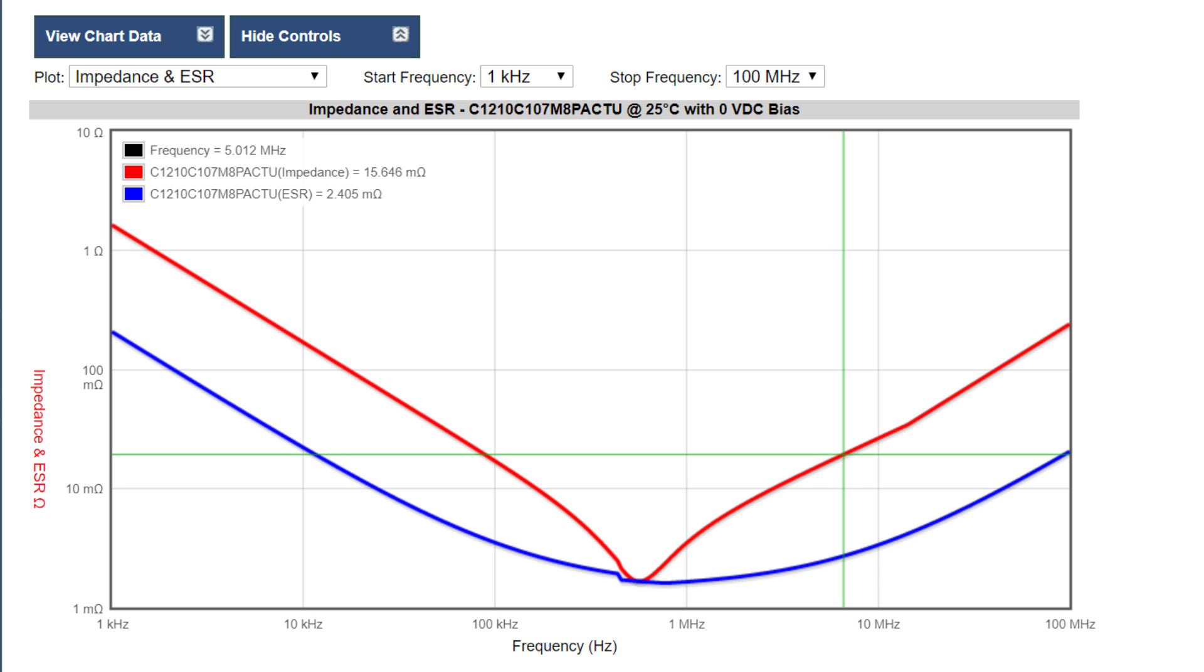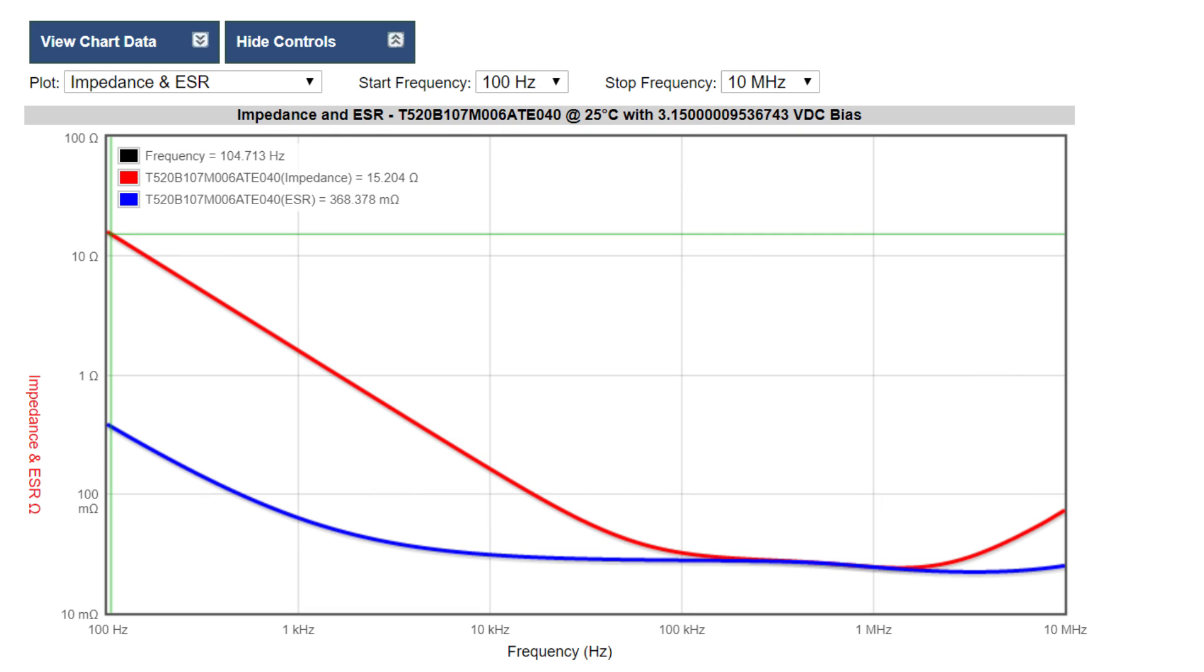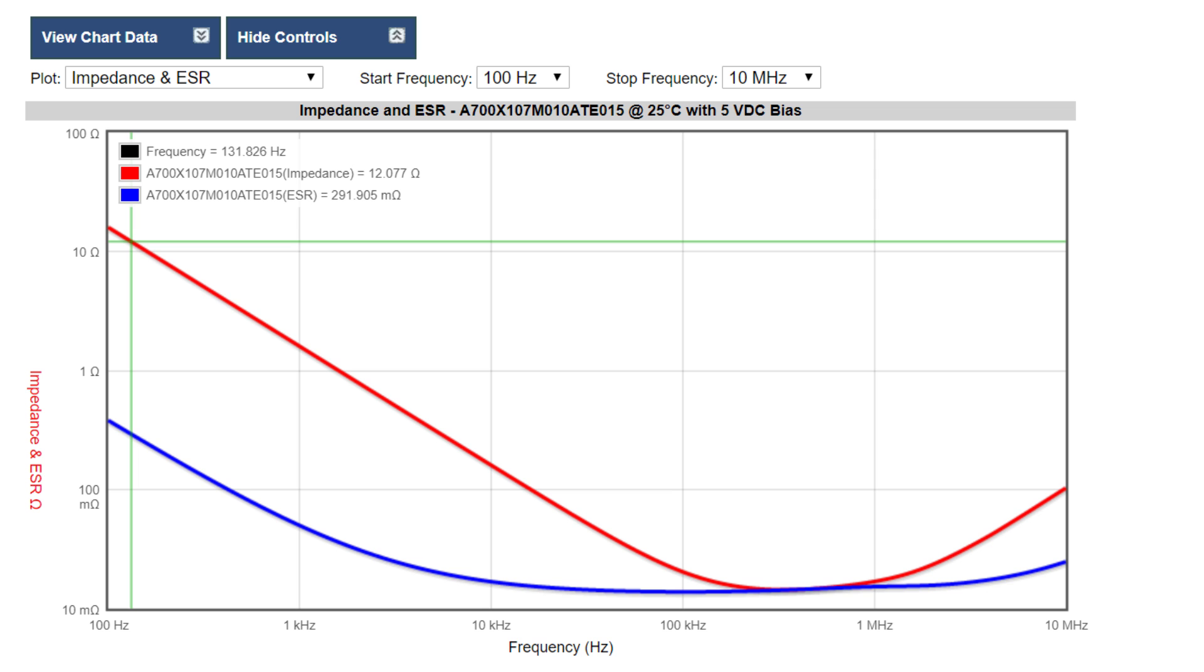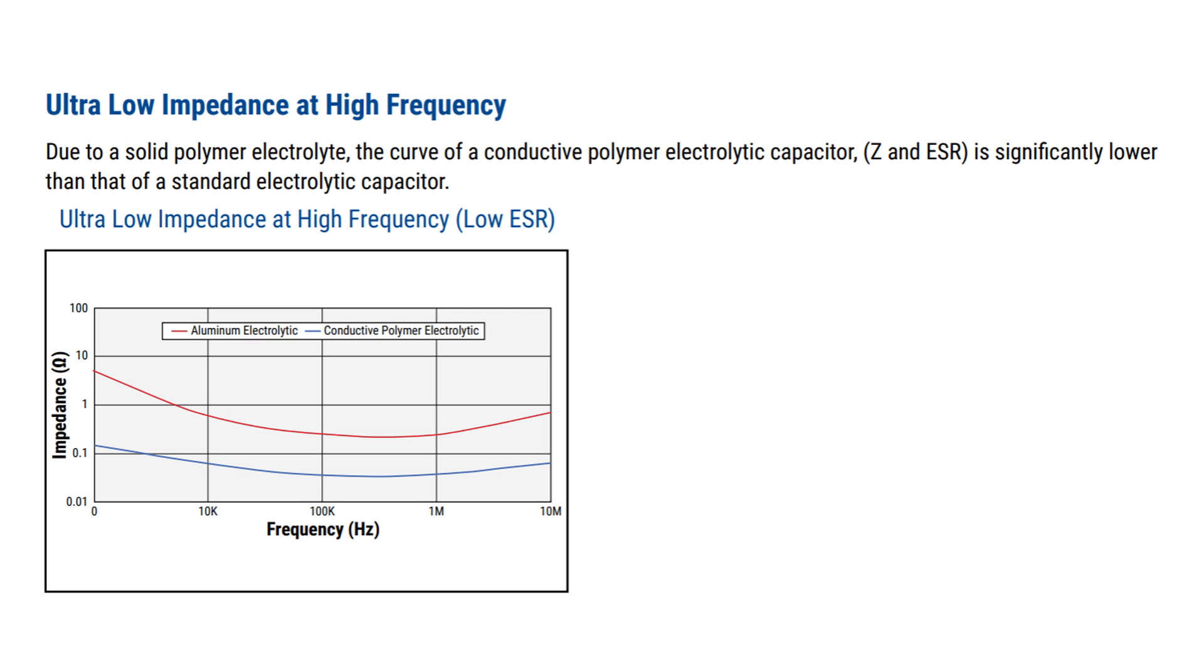Here are the ESR and impedance charts of all the different KEMET components we will be testing. I know that the ESR of a capacitor is the main contributor of ripple voltage. I suspect that ceramic capacitors will have the lowest peak-to-peak ripple and aluminum electrolytic will have the highest. Now let's move on to the test setup.